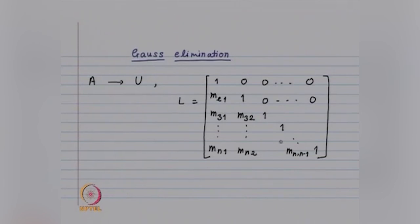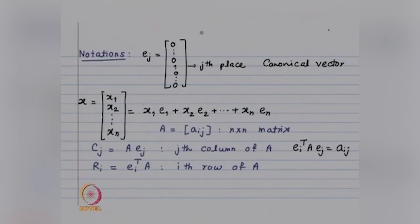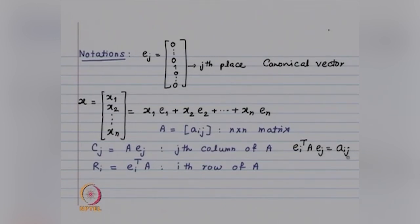We will first consider the 3×3 matrix case. Here are some notations: Eⱼ will denote the canonical vector which has only 1 at the j-th place and all other entries 0. A vector x is always a column vector, equal to x₁E₁ + x₂E₂ + … + xₙEₙ. The (i,j)-th entry of an n×n matrix is denoted Aᵢⱼ. If you look at A multiplied by Eⱼ, you get the j-th column of A. If you look at Eᵢᵀ A, you get the i-th row of A, and Eᵢᵀ A Eⱼ gives the scalar Aᵢⱼ.